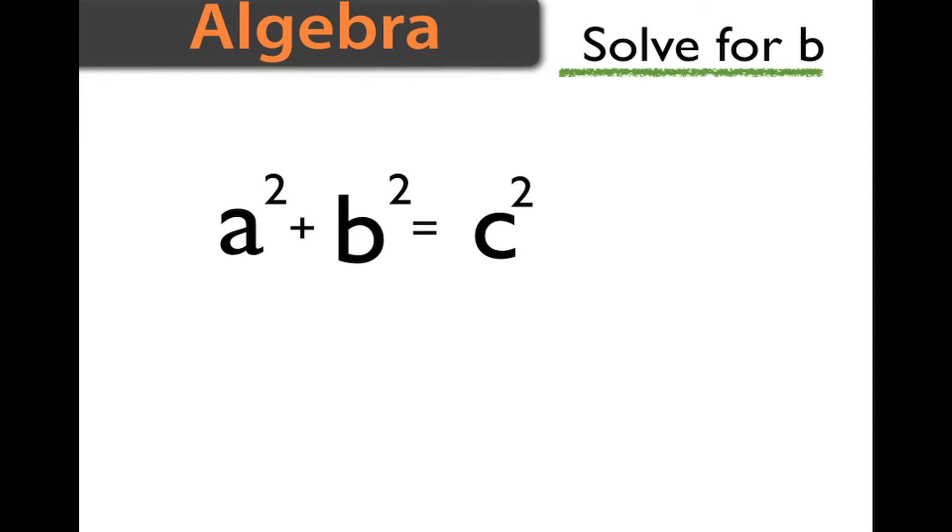In this case, we are going to solve for b. We want to get b by itself on the left side of the equation. In order to do that, we need to subtract a² from both sides.